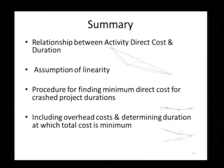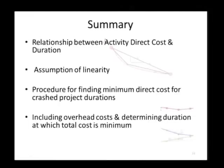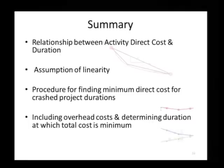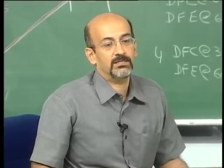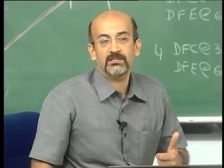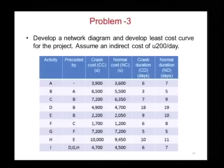To summarize what we have done in this lecture: we looked at the relationship between activity direct cost and duration, and we saw the assumptions needed — particularly the linearity assumption for ease of calculation. We went through the procedure of finding minimum direct cost for crash project durations. Then we included overhead cost and found the duration at which total cost is minimum. We will continue with this topic for one more lecture, covering variables like liquidated damages. This problem is assigned as homework, and we will start the next class with a solution to the risk problem.